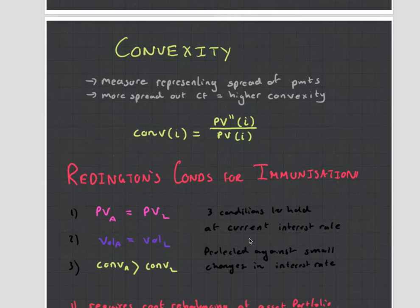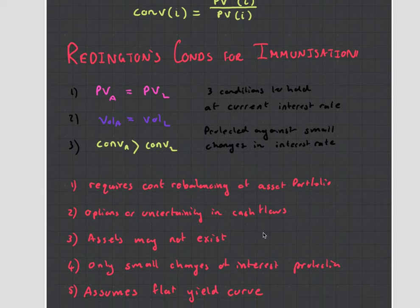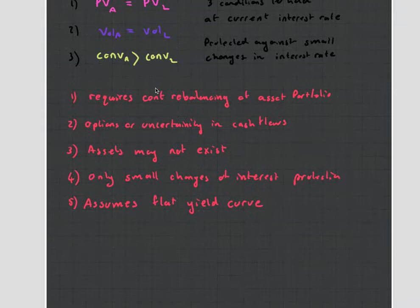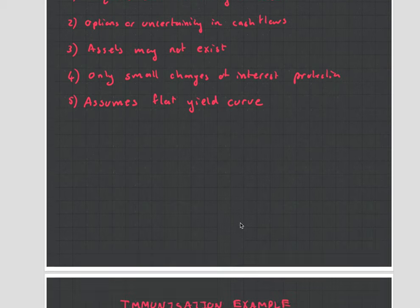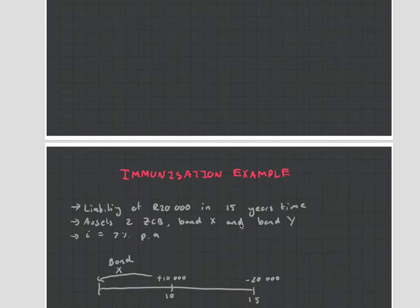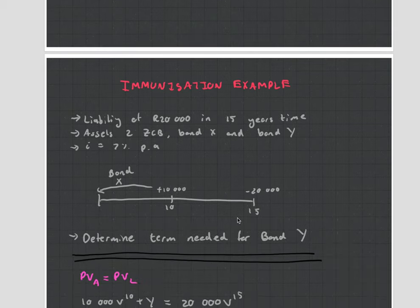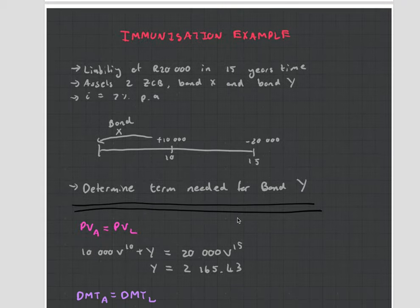Now that we have the basics of immunization under our belt — understanding the limits and those five points — I'd encourage you to think about them. For example, think about why an asset may not exist: some assets don't exist because the market is not yet sophisticated enough, but in the future, those assets may exist. Anyway, let's get to a typical immunization exam question.